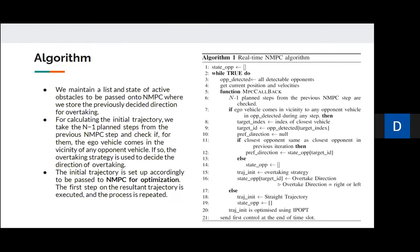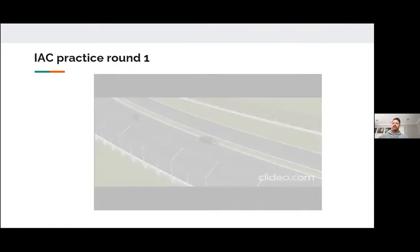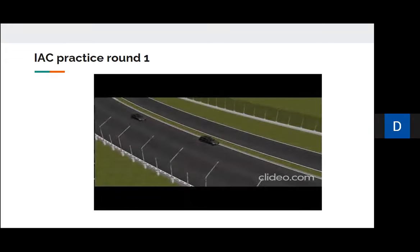The final algorithm takes the previous N-1 planned steps, checks if they collide with any vehicle, and for that vehicle considers overtaking paths from the left and right. It optimizes both individually using MPC and applies the first planned step. There is a video on the paper demonstrating this.